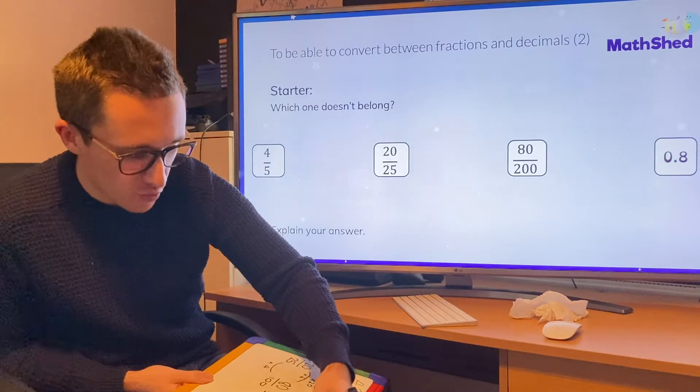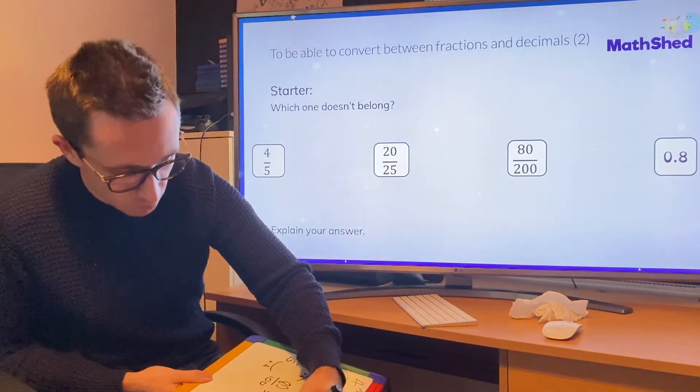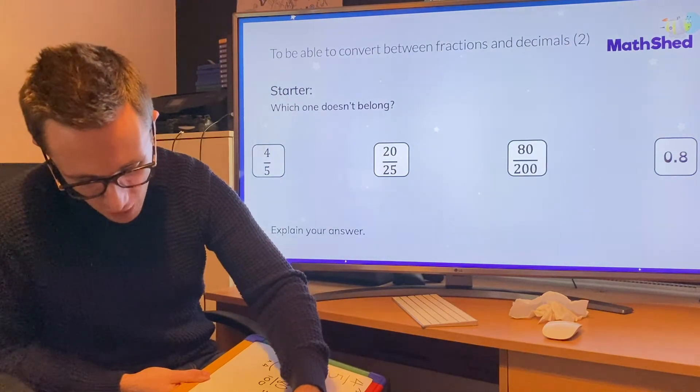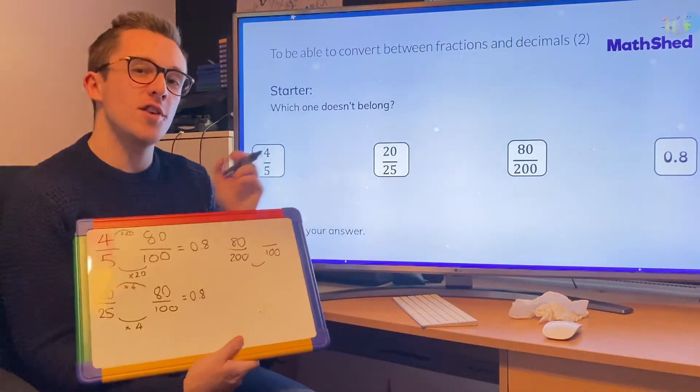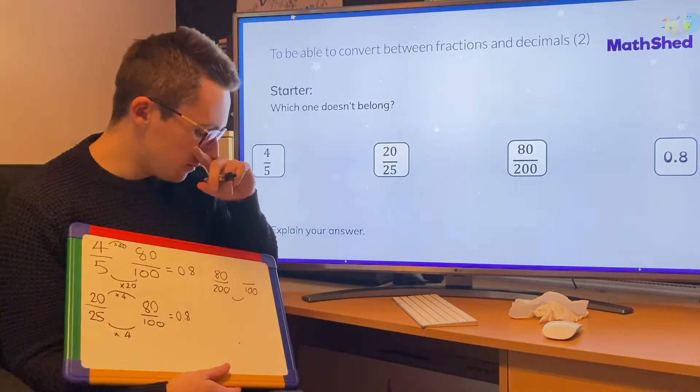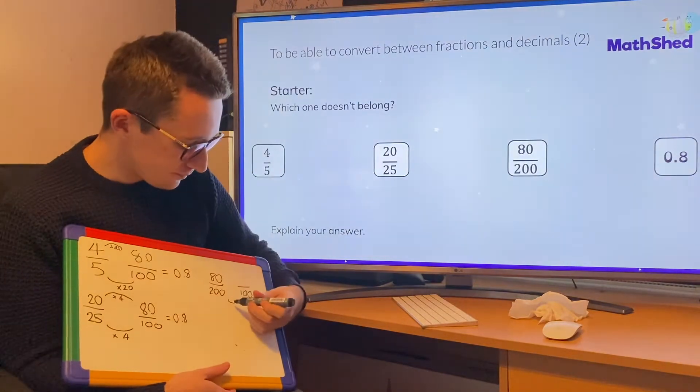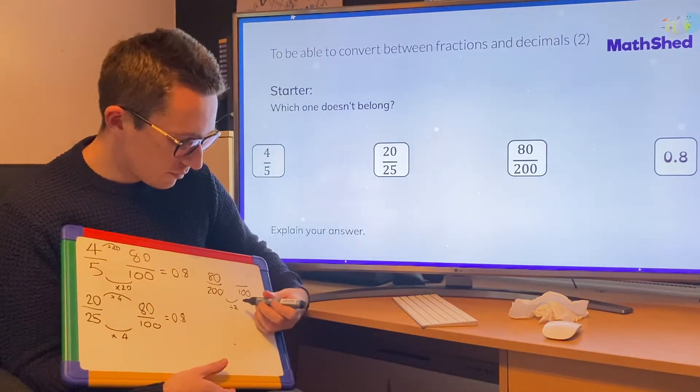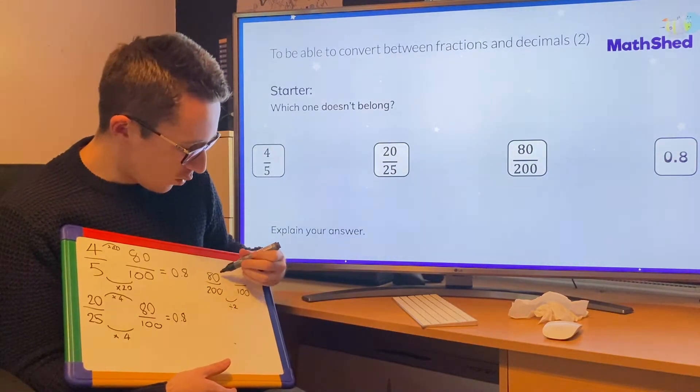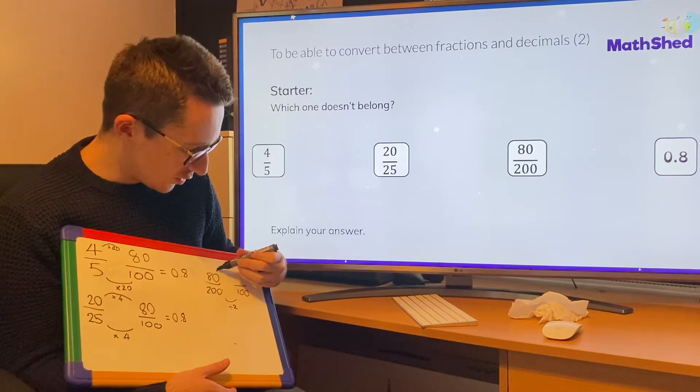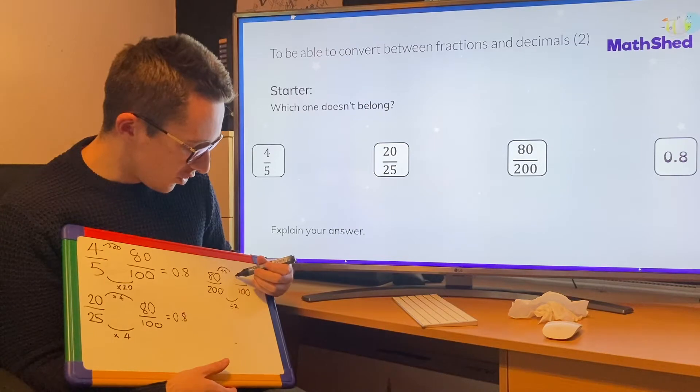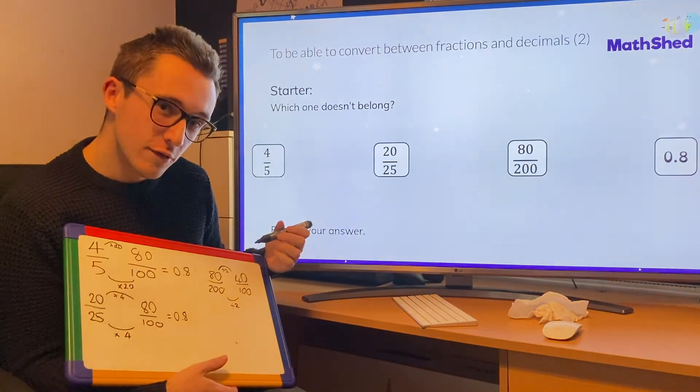So I've got 80 over 200. I'm going to turn that into a fraction with a denominator of 100. Now to go from 200 to 100, I'm not going to multiply because that will make it bigger. I'm going to divide. I divide by 2. 200 divided by 2 is 100. What I do to the bottom, I need to do to the top. Divided by 2. 80 divided by 2 is going to be 40.